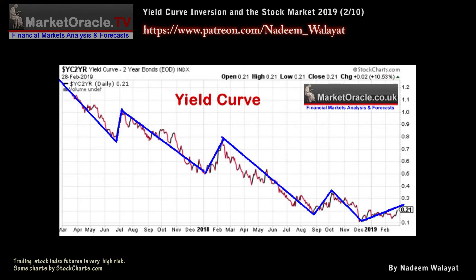As things stand today, the Yield Curve is signalling weaker economic growth but not a recession during 2019, which compared to the trend trajectory going into December is strongly positive for stocks. Of course, the Yield Curve could weaken once more by targeting a break of the low of 0.11, which should be a good advance signal for stock market weakness. But until then, the signal from the Yield Curve is positive for stocks for 2019.